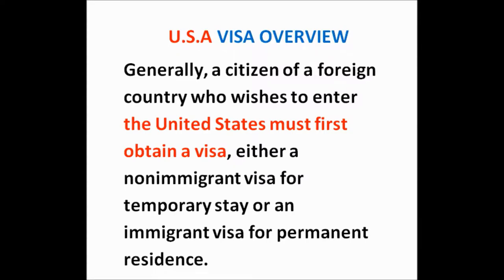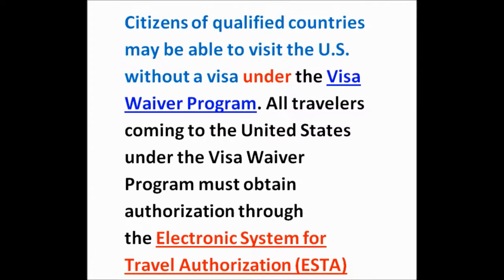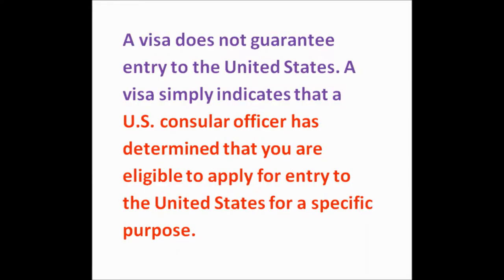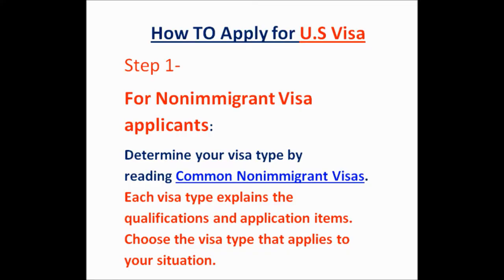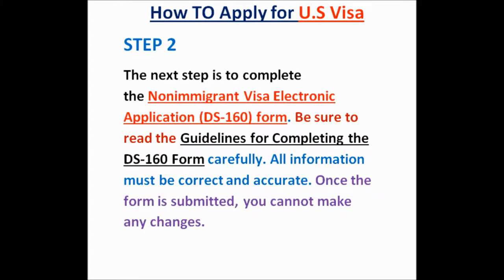The purpose of your intended travel and other factors will determine what type of visa is required. Under U.S. immigration law, as a visa applicant you will need to establish that you meet all requirements to receive the category of visa for which you are applying. There are 100 or more types of U.S. visas. The most common types to know are B1, J1, H1, H2, L1, H4, and visitor visa. Step one is to determine your visa type by reading about common non-immigrant visas. Be sure to also review the visa waiver program — if your country participates, you do not need to apply for a visa.